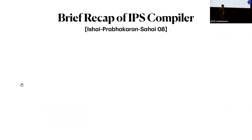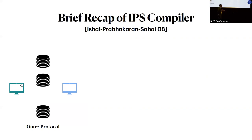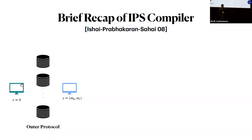Let me give a brief recap of the IPS compiler, which is the starting point of our work. The IPS compiler uses an outer protocol with two clients and M servers, requiring a two-round client-server outer protocol. For constructing an oblivious transfer, this outer protocol computes the OT functionality: the receiver client has a choice bit B (denoted X) and the sender client has two strings M0, M1 (jointly denoted Y).